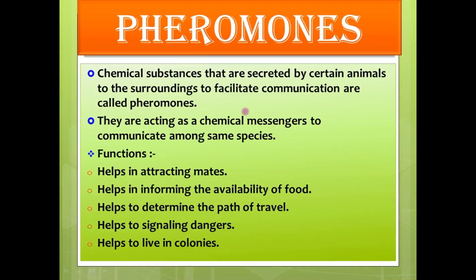Pheromones are chemical substances secreted by certain animals to the surroundings to facilitate communication, and they act as chemical messengers to communicate among the same species. What is the basic difference between hormone and pheromone? Hormones are produced within the body, whereas pheromones are produced outside the body. Hormones help to communicate within the body — among various systems and organs — whereas pheromones help to communicate among different members of the same species. Now let's move on to the functions of pheromones.